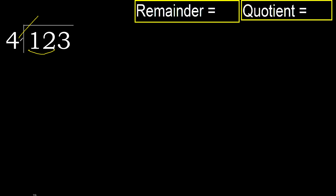4 multiplied by 4 is 16. 16 is greater. Multiply by 3 is 12, which is not greater.